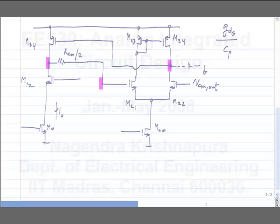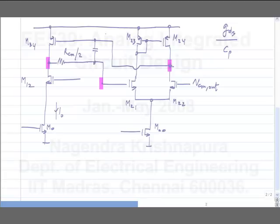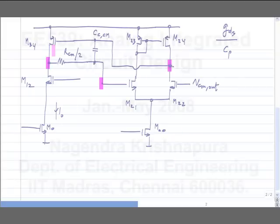This looks exactly like a two-stage op-amp — if you think of this as the first stage and M34 as the second stage. So how will you compensate a two-stage op-amp? You do Miller compensation. This compensating capacitor is for the common mode. It is exactly like Miller compensation for the two-stage amplifier: the differential pair used in common mode feedback is the first stage, and the second stage is M34.